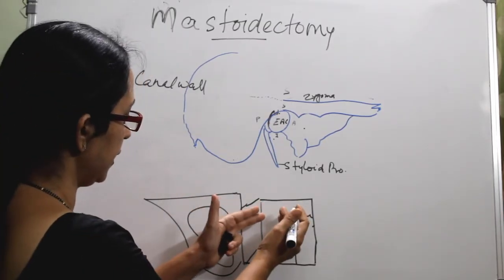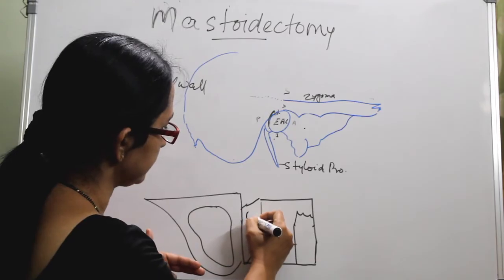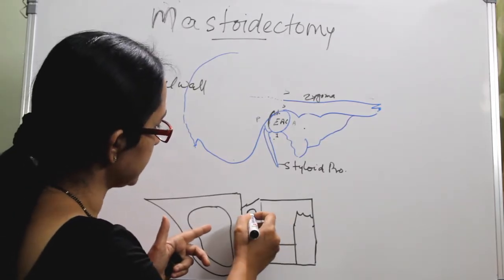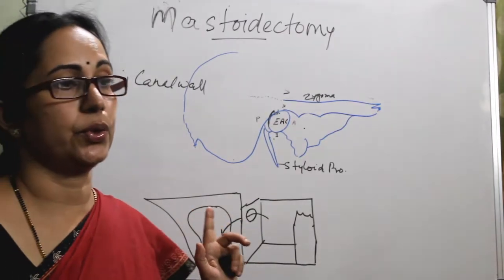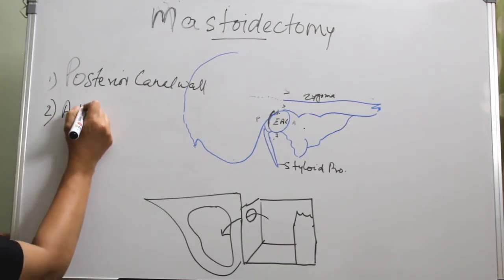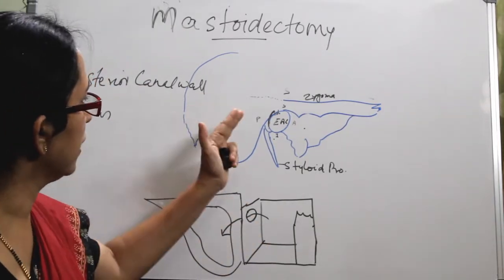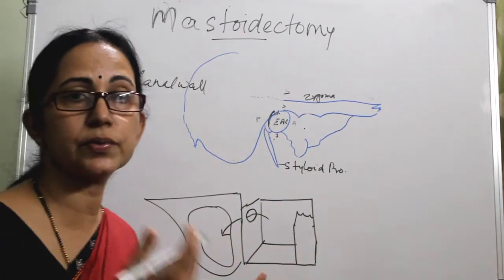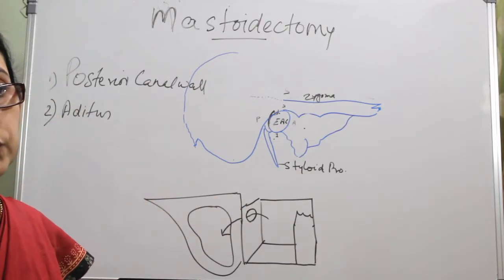From the middle ear, there is a communication to the mastoid, and that is the aditus — the aditus ad antrum — which is in the posterior wall. Through the aditus, the middle ear communicates with the mastoid. So you should be familiar with the aditus. This posterior canal wall is a common boundary of the external auditory canal and is continuous with the posterior wall of the middle ear, with an opening called the aditus.